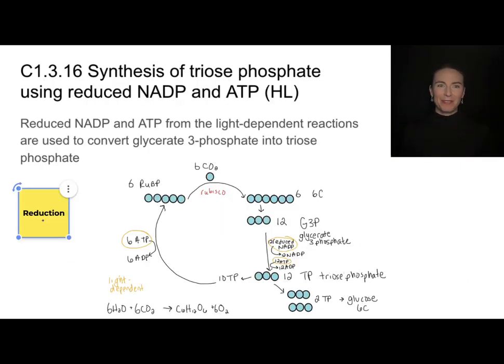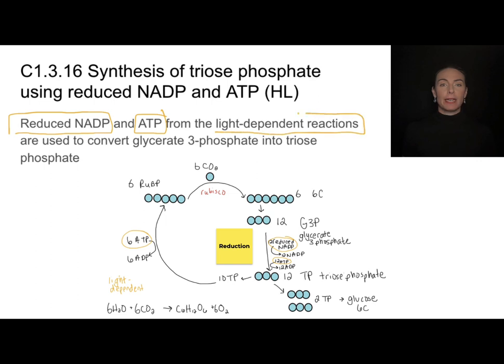So now time for some recap and details. The synthesis of triose phosphate is happening in this reduction part of my cycle where we're taking these G3Ps and we are reducing them to form the TPs. It is going to require us to use that reduced NADP and the ATP that we made in those light dependent reactions. That's why we needed those light dependent reactions in the first place.